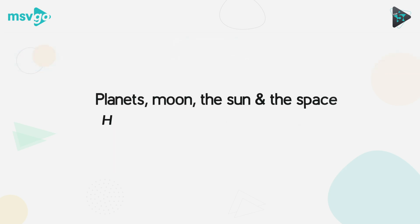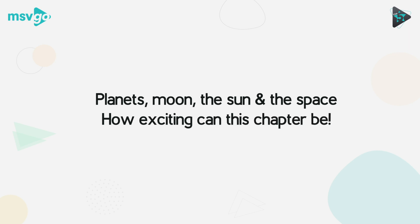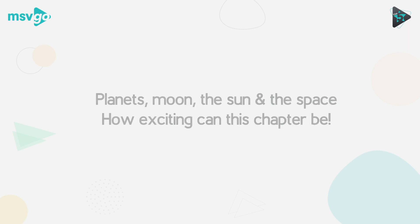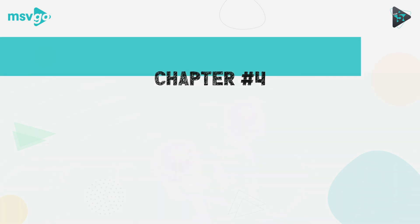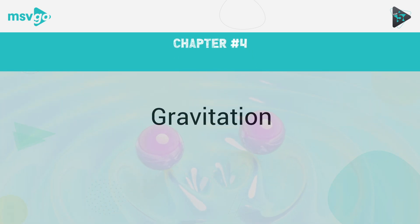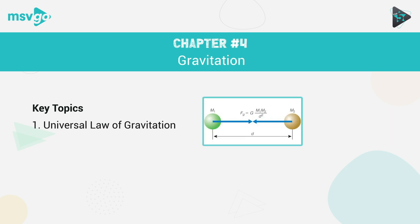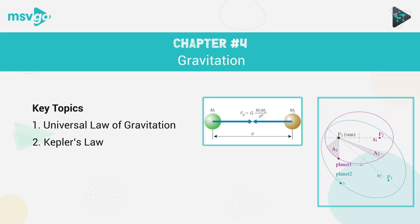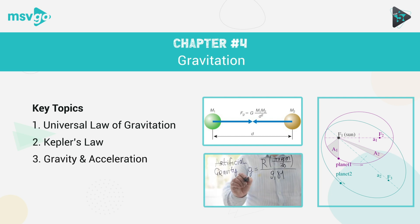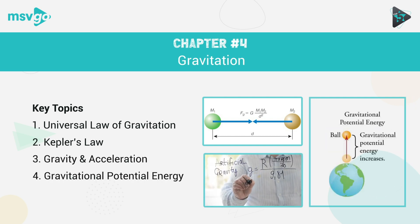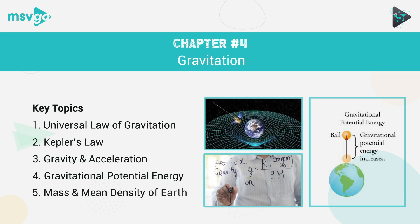Learn about the universal force that sustains life on Earth. On number four is the chapter that fascinates many — Gravitation. Key topics under this chapter are: Universal Law of Gravitation, Kepler's Law, Gravity and Acceleration, Gravitational Potential Energy, and Mass and Mean Density of Earth.